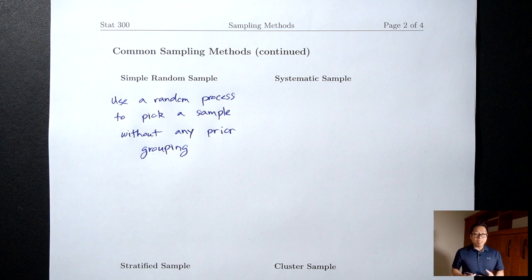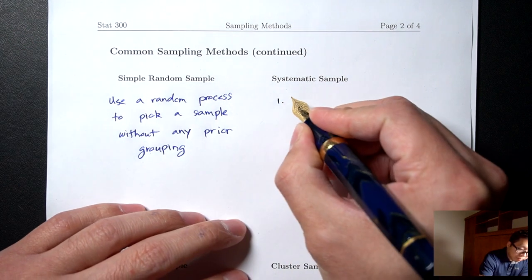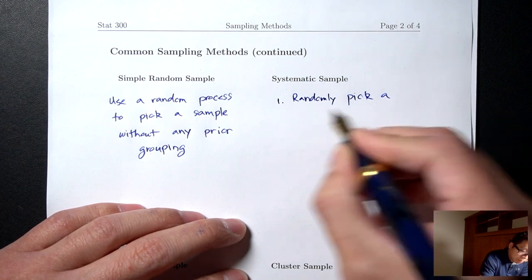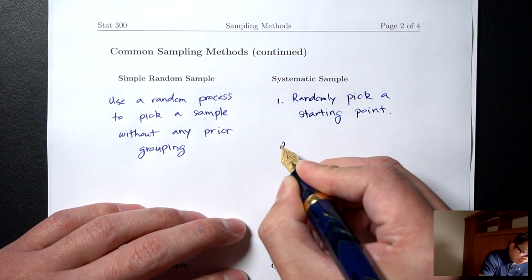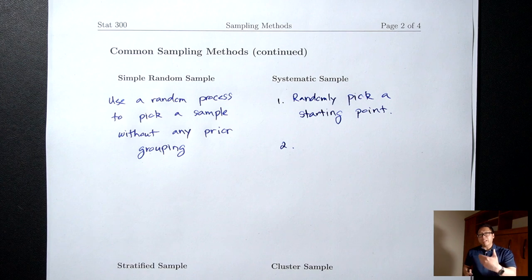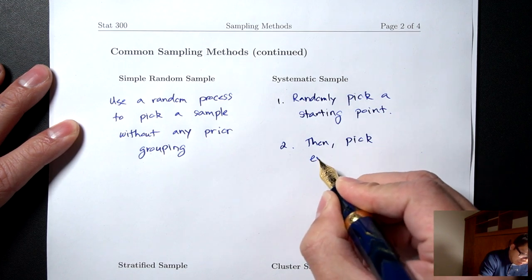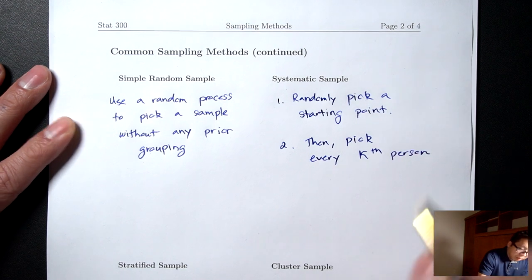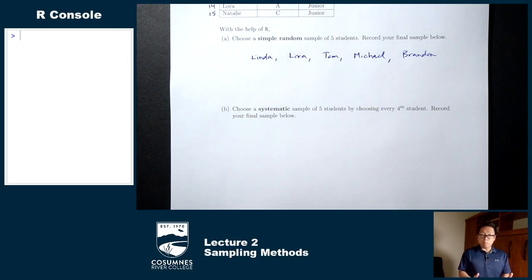The next method is called systematic sample. In a systematic sample, the first thing you're going to do is randomly pick a starting point, and then pick every kth person — every third person, or every tenth person, for instance. Let's try a systematic sample using R.